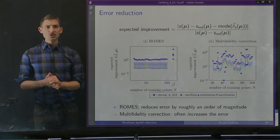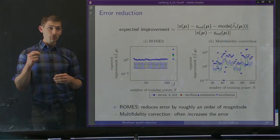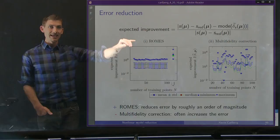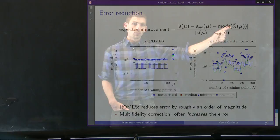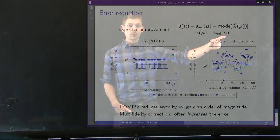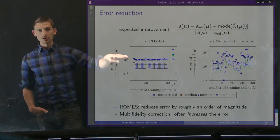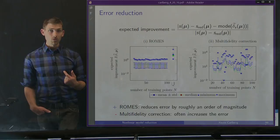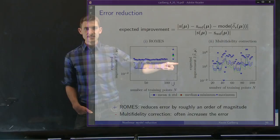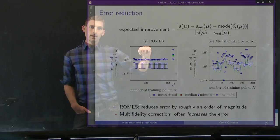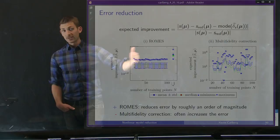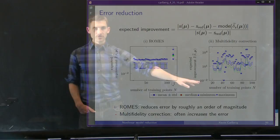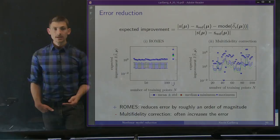We can also show how well our method works by adding the mode of the ROMS predicted error as a correction and computing expected improvement — how much the corrected reduced-order model solution improves versus the uncorrected error. As we increase the number of training instances, the ROM almost always improves the error, sometimes by almost two orders of magnitude. Comparing with a uniform distribution in the input space and the multi-fidelity correction approach, those methods exhibit no such improvement and generally make the error much worse in magnitude.